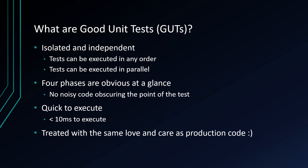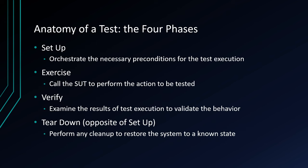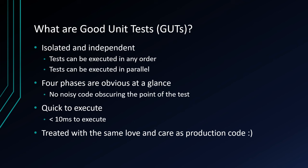What are good unit tests? They should be isolated and independent — isolated meaning they can be executed in any order and in parallel. They don't share any state between tests, and it doesn't matter which order you run them. Because they're not sharing any state, they all execute independently of each other. When you look at the source code for a test, the four phases should be obvious at a glance. Often the teardown or setup phase is implicit, so you usually just see an exercise phase and a verify phase.